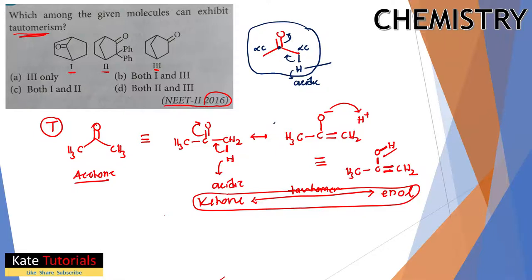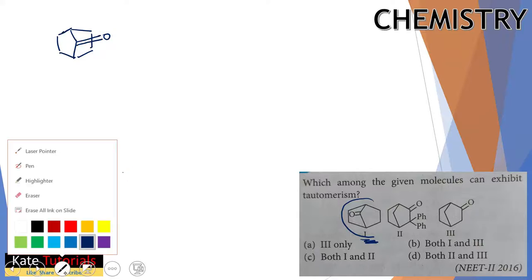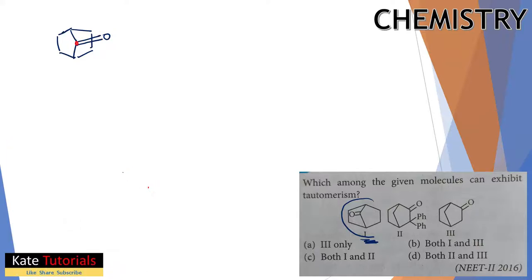Let us look at the first molecule. It is a cyclic molecule with a ketone group. The alpha carbon is the carbon next to the ketone carbon. Looking at the valence, the alpha carbon has one hydrogen on each side - these are alpha hydrogens. But these alpha hydrogens are not acidic.